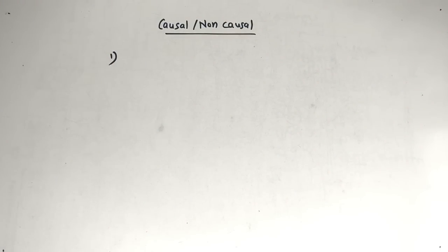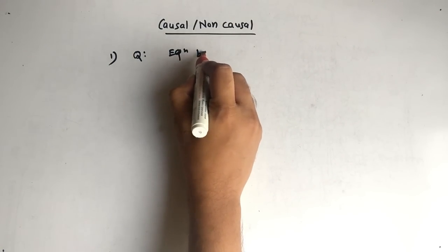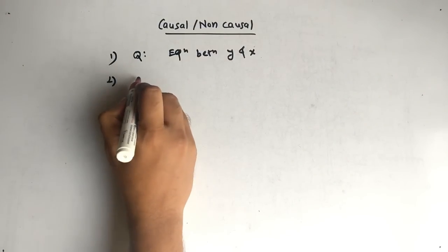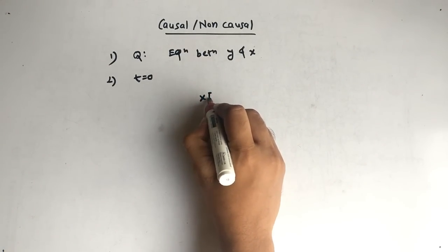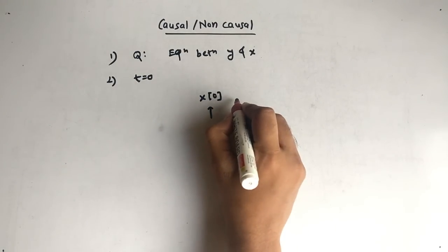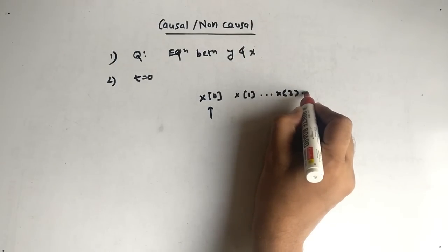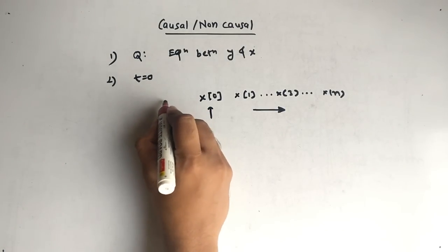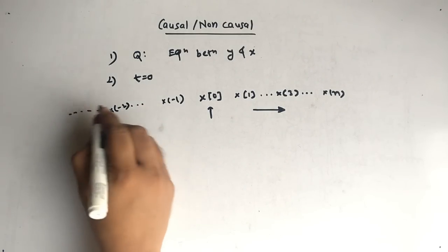You will have a question with an equation between y and x. What you have to do is put t equal to 0. After putting t equal to 0, you will get x of 0 — this is our partition point. Now it can be x of 1, or x of 3, or any value x of n on this side, or it can be x of minus 1, x of minus 2, and so on on the other side.